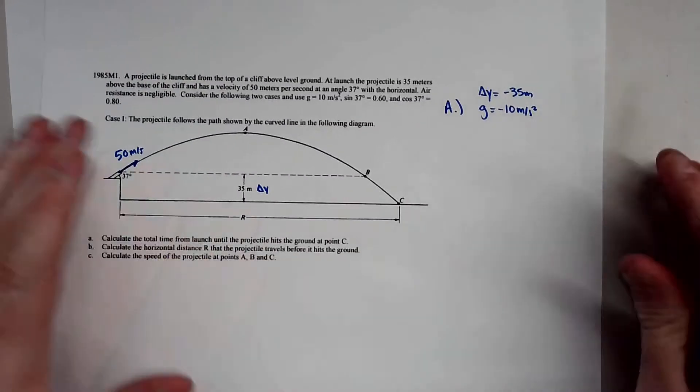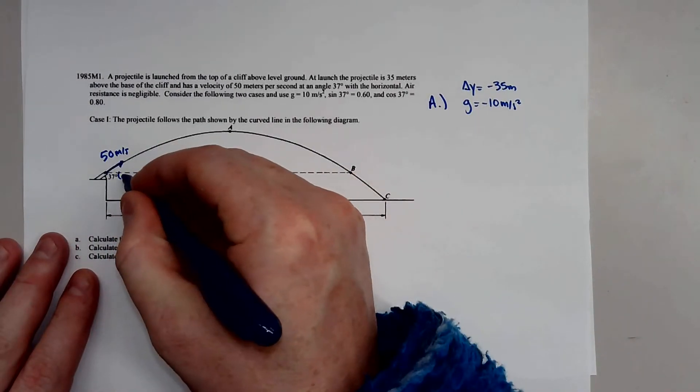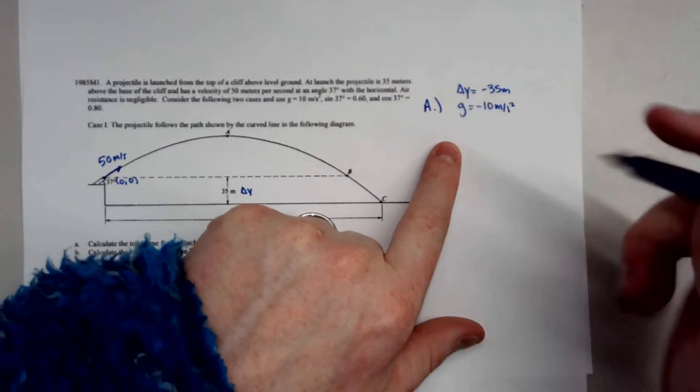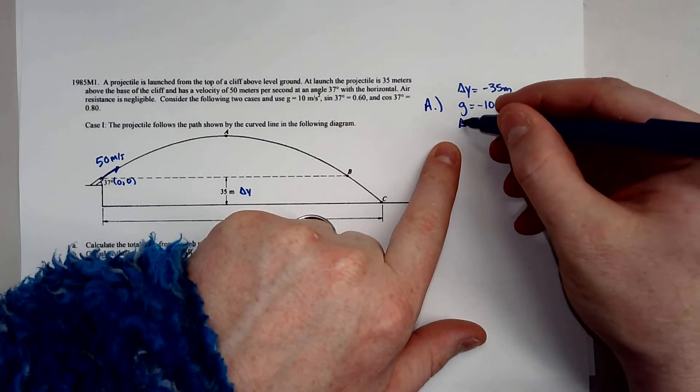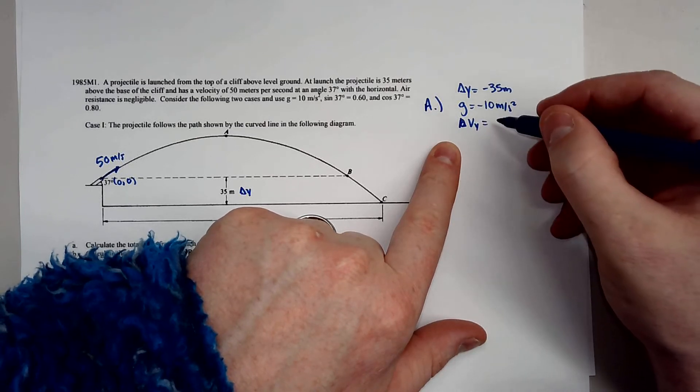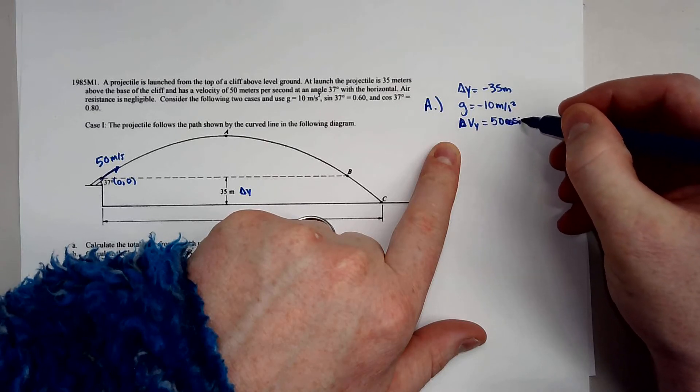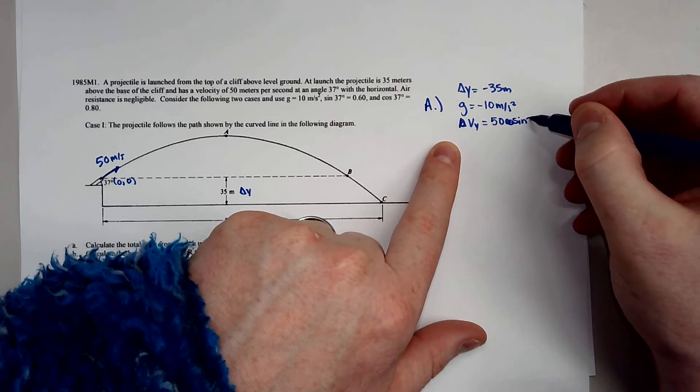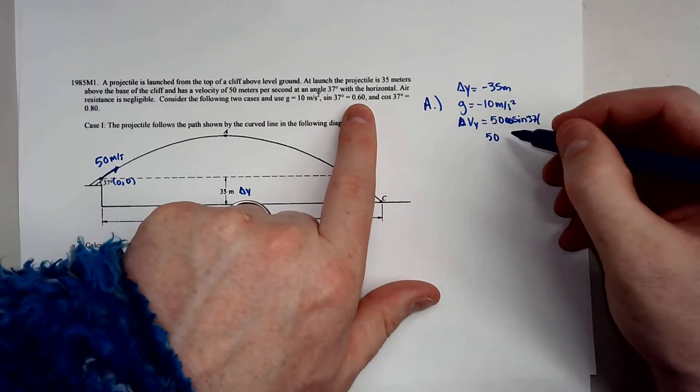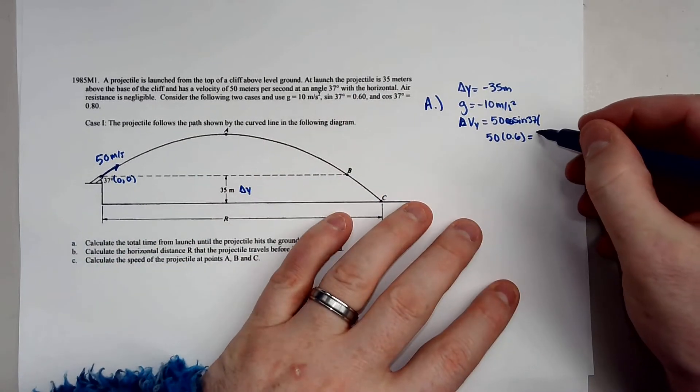I use negative 35 because the projectile will end up below where it started, so think of this as the 0,0 plane. The velocity initial in the Y direction will just be 50 sine of 37, and they were nice enough to give it to me as 50 times 0.6, and that's going to give me 30 meters per second.